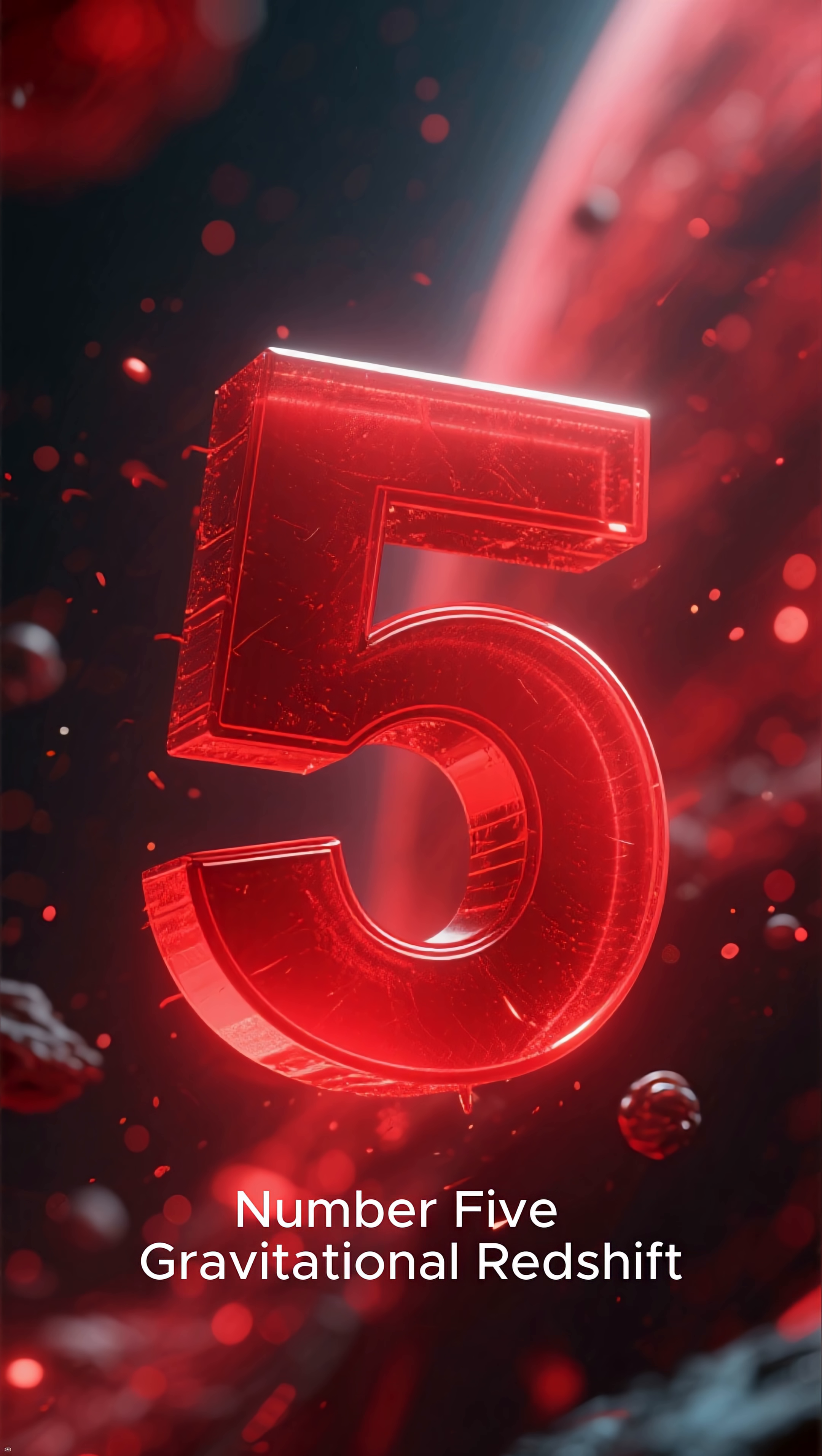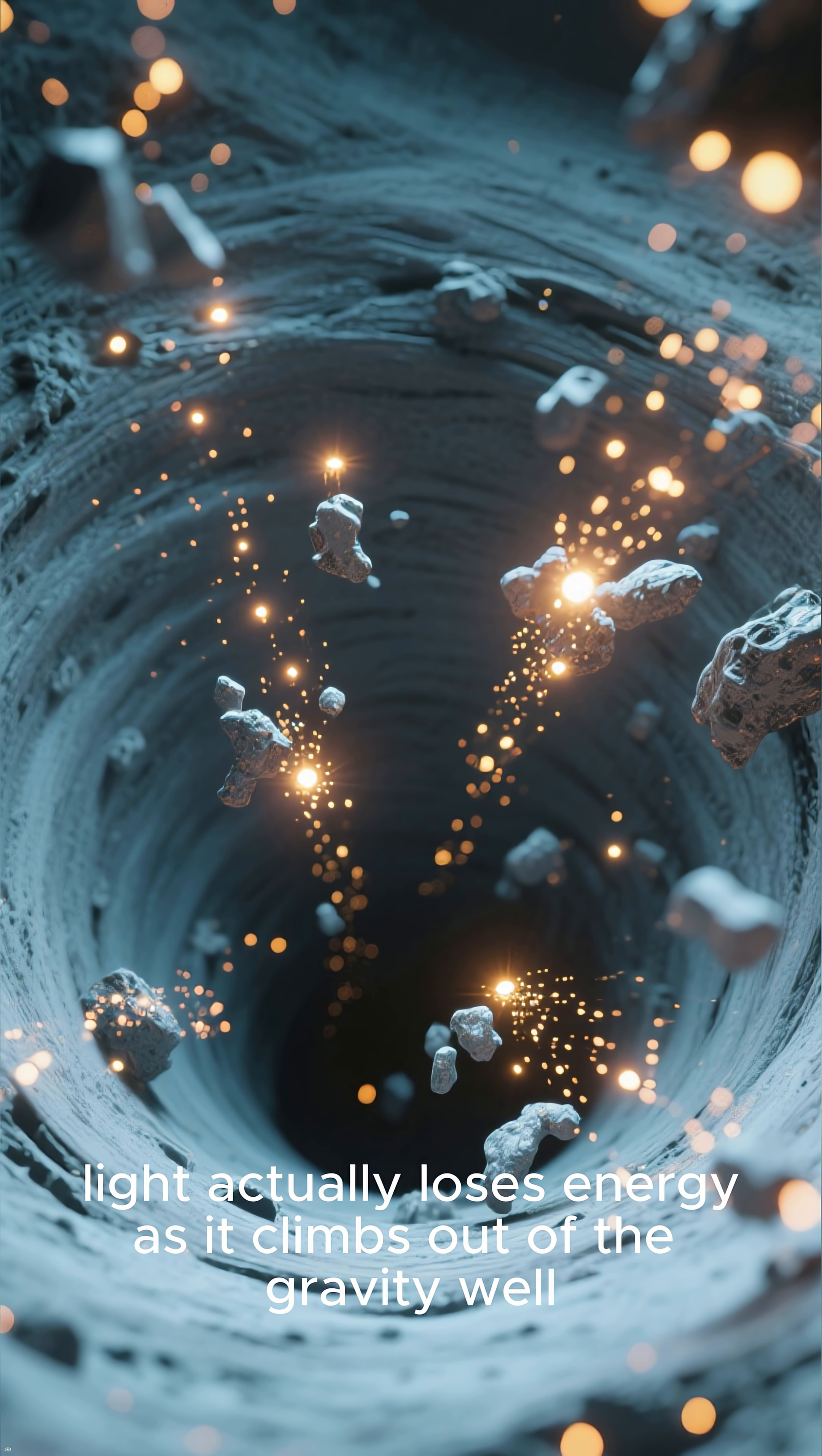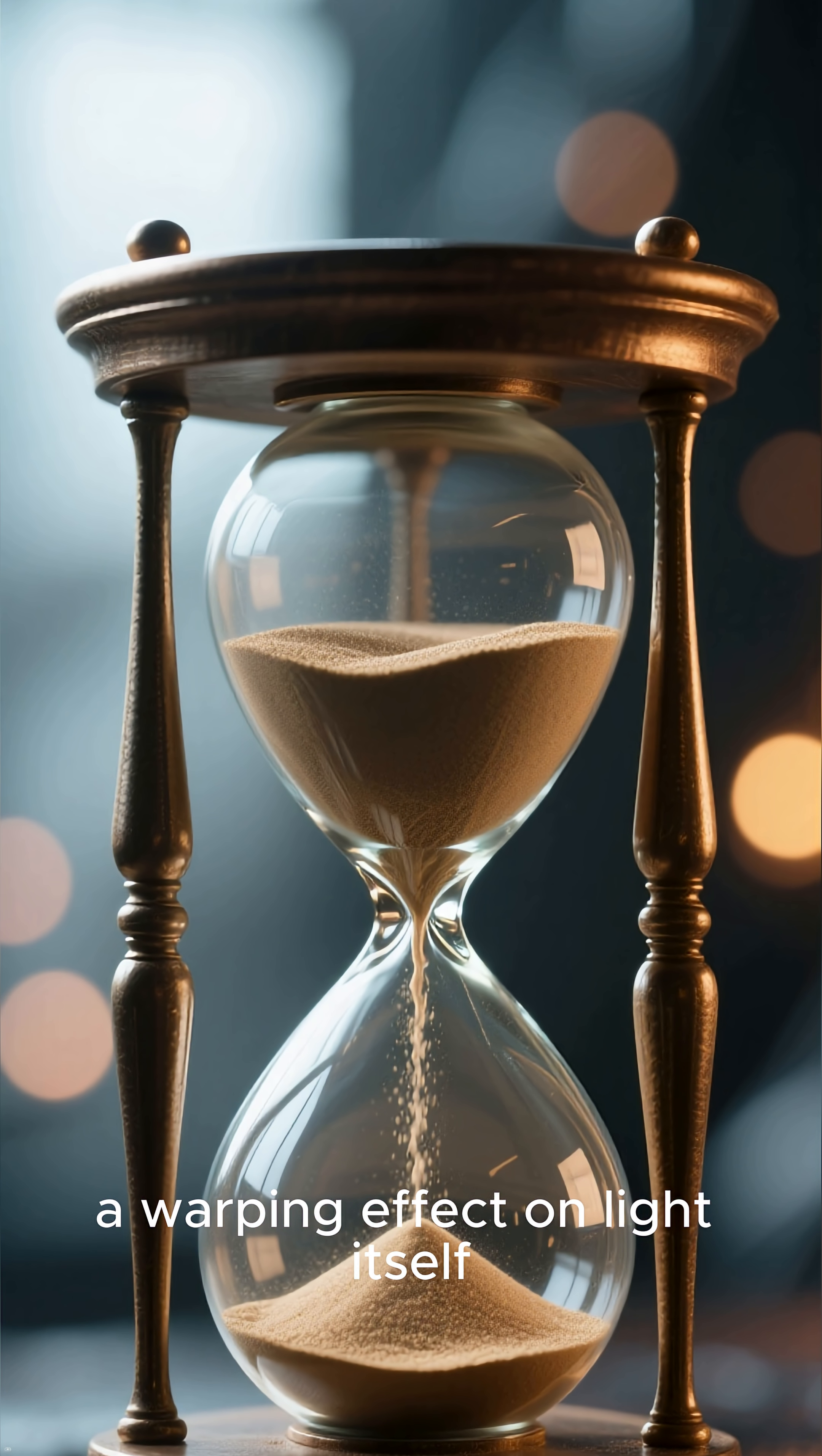Number five: Gravitational redshift. Our journey into warped space-time begins with a subtle yet profound effect. In a strong gravitational field, light actually loses energy as it climbs out of the gravity well. This loss of energy causes the light to shift towards the red end of the spectrum, a phenomenon called gravitational redshift. It's a direct consequence of time running slower in stronger gravity, a warping effect on light itself.